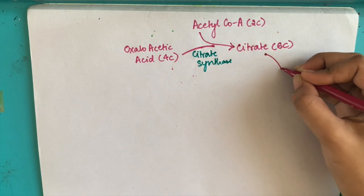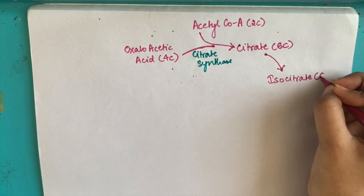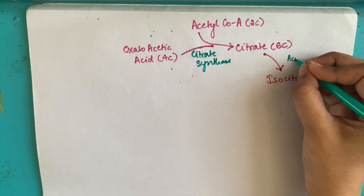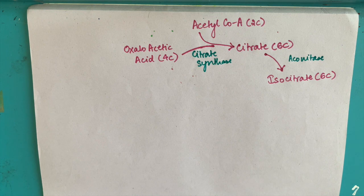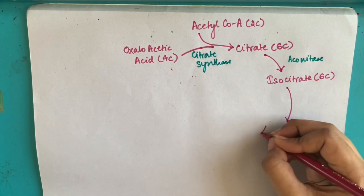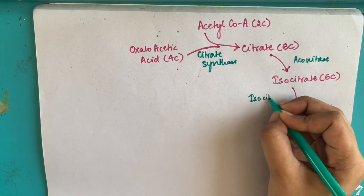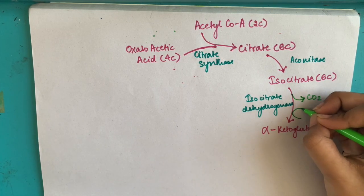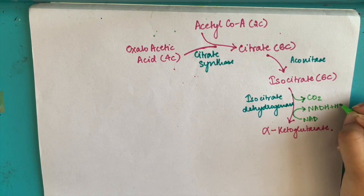The next step is the synthesis of alpha-ketoglutarate or alpha-ketoglutaric acid from isocitrate. This process involves a loss of a carbon atom. Alpha-ketoglutarate is a 5-carbon compound and this carbon atom is lost as CO2. This reaction is catalyzed by isocitrate dehydrogenase. Along with CO2, there is also synthesis of NADH from NAD+. Since NAD+ is reduced, alpha-ketoglutarate is the oxidized product. It's a redox reaction.